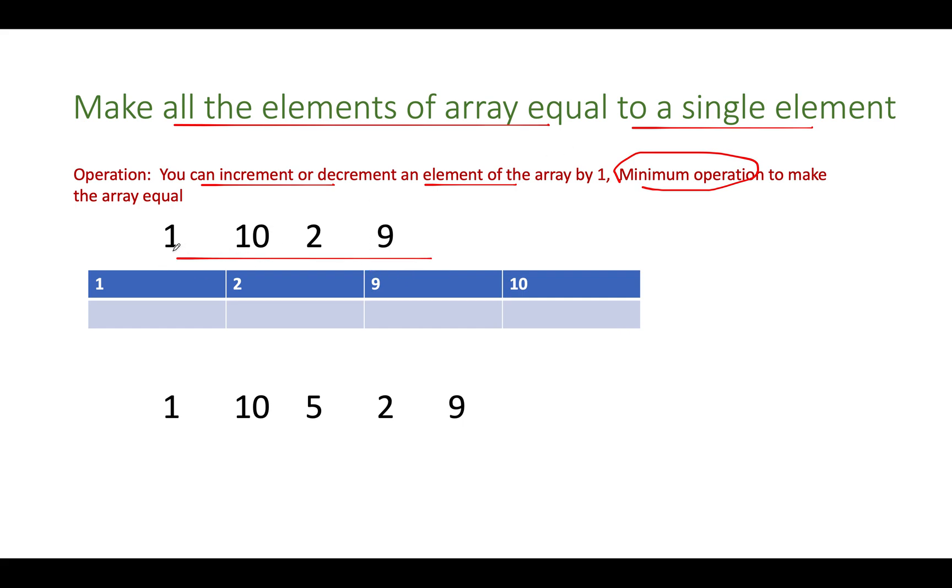For example in this array we have 1, 10, 2 and 9. Which element shall we pick up - 10, 2, 9 or 1 - to which all the other elements should be made equal to? That element would be nothing but the median of the array. Why the median element? Because the median element has a property that it stands at the middle point and all the elements to the left of it will be lower than the current median value, and all the elements to its right would be greater than the median value. So we will try to balance each of these elements to the median value and that will give us the minimum number of operations needed to make all the elements of the array equal.